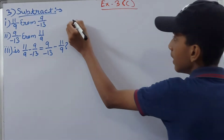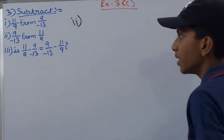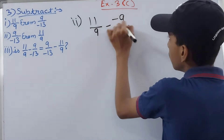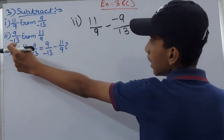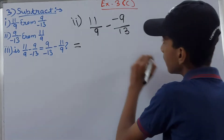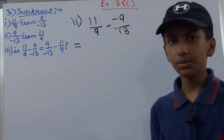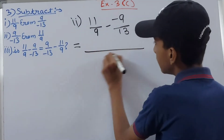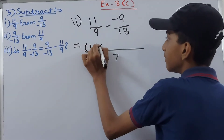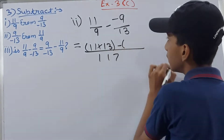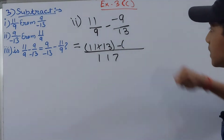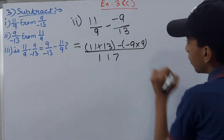Now for part (ii): subtract 9/(−13) from 11/9. This becomes 11/9 − (−9/13), because the minus sign from the denominator moves to the numerator giving −9/13, and subtracting a negative gives a positive. The LCM of 9 and 13 is still 117, so we write the expression over 117.